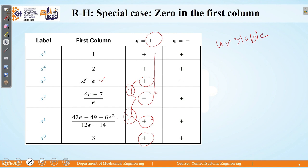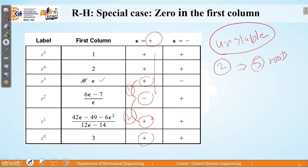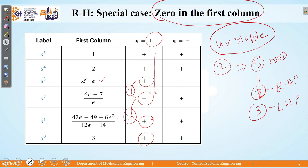We can directly predict that the system is unstable on the basis of number of sign changes. The number of sign changes observed here are 2. Therefore, we can say that out of 5 roots, 2 will go in the right half of the s-plane and remaining 3 will remain in the left half of the s-plane. Therefore, since these 2 roots are going in the right half of the s-plane, the system is unstable. This was the special case of a 0 introduced in the first column, and this is the way we can predict the behavior of a system for stability or instability.